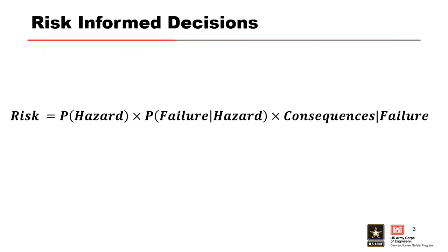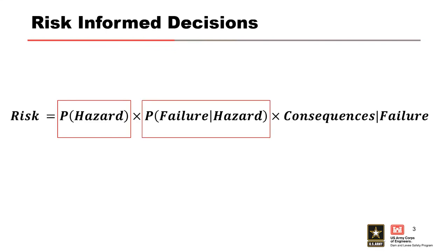A little bit of math right in the morning is what everybody loves. Here is an equation — don't be scared, it's not that bad. This is the general risk equation that USACE uses. Risk is defined as the probability of the hazard times the probability of failure given the hazard times the consequences given the failure.